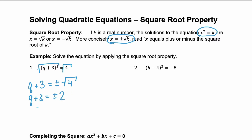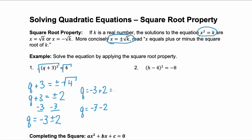We need to solve for q, so let's subtract 3 from both sides. That gives us q equals negative 3 plus or minus 2. The plus or minus tells us we have two possibilities: q equals negative 3 plus 2, and q equals negative 3 minus 2. Negative 3 plus 2 equals negative 1, and negative 3 minus 2 equals negative 5. So the solution here is negative 1 or negative 5.